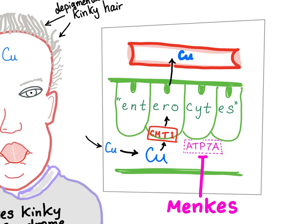A defect in ATP7A causes Menke's disease. Copper is needed for many enzymes, especially mitochondrial enzymes.